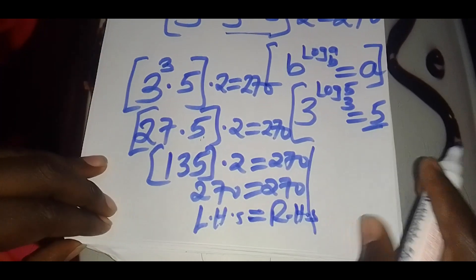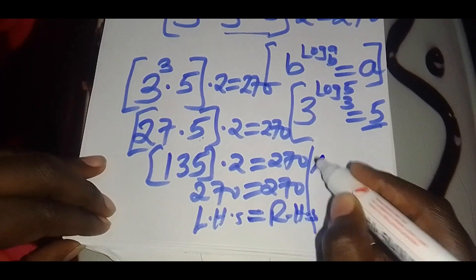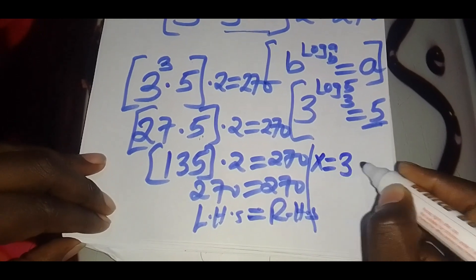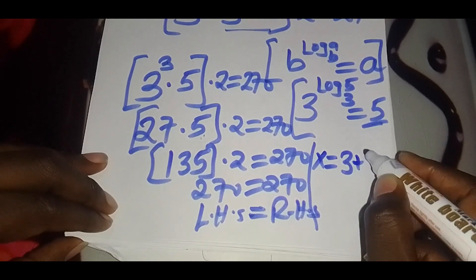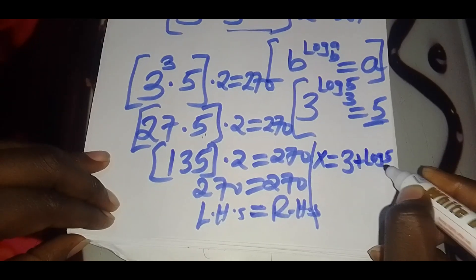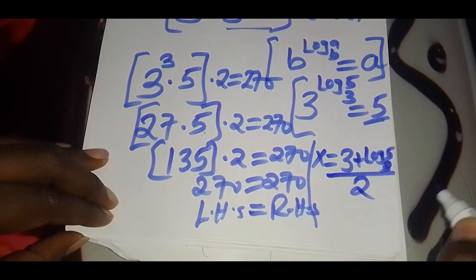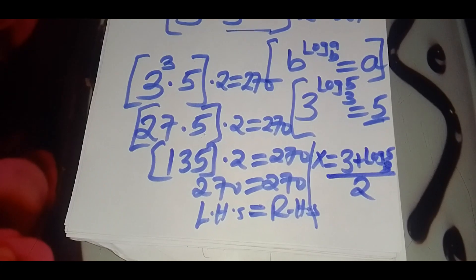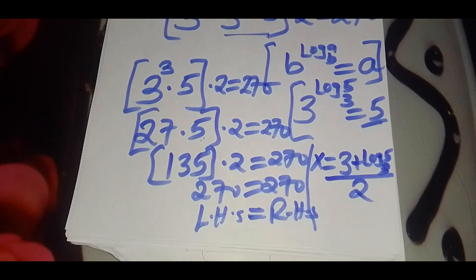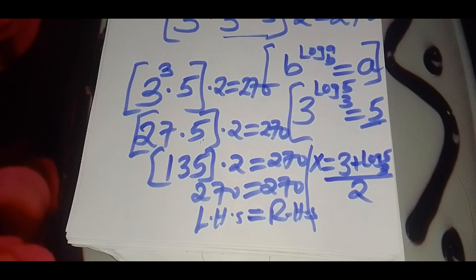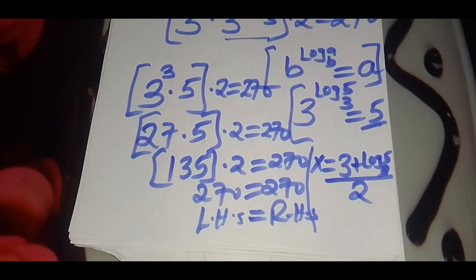That shows that the value of x equals (3 plus log₃5) divided by 2. That is the solution to this exponential equation. Thank you for watching, and kindly subscribe.